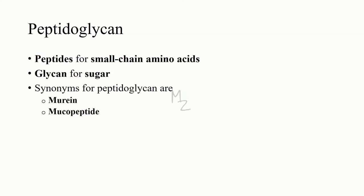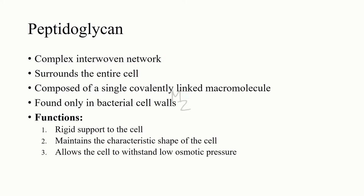Now let's talk about peptidoglycan. The word has two parts: 'peptido,' referring to peptides — small-chain amino acids — and 'glycan,' referring to sugars. Other names for peptidoglycan are murein or mucopeptide. Peptidoglycan is a complex interwoven network that surrounds the entire cell and is composed of a single covalently linked macromolecule. It is found only in bacterial cells. Its functions are to provide rigid support to the cell, maintain the characteristic shape, and allow the cell to withstand low osmotic pressure.